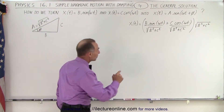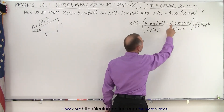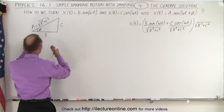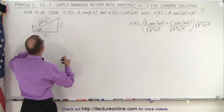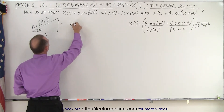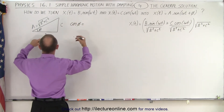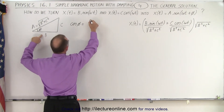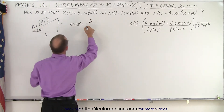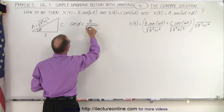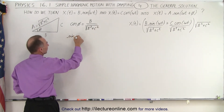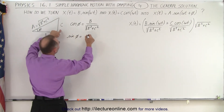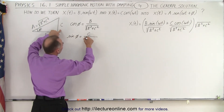Now when you look at b divided by this denominator and c divided by the denominator, you can see there's a relationship. Since b is the adjacent side to the angle, we can say that the cosine of the angle phi is equal to the ratio of the adjacent side b divided by the hypotenuse, the square root of b squared plus c squared. And we can do the same with the sine function: the sine of phi is equal to the opposite side c divided by the hypotenuse, the square root of b squared plus c squared.